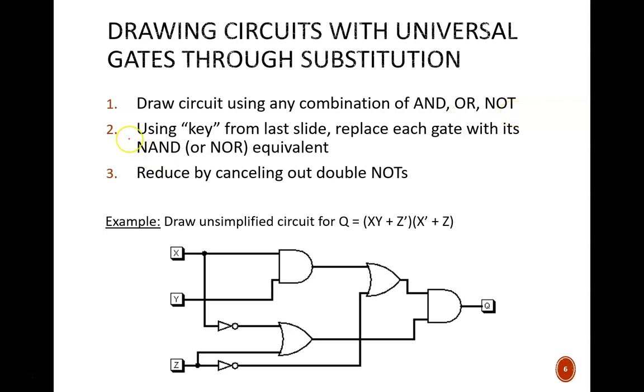Then we will replace each gate in that diagram with its all-NAND equivalent by applying our conversion key. Finally, if possible, we will simplify by canceling out double NOT gates.